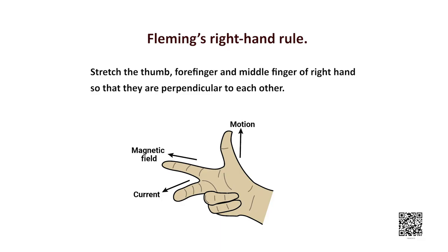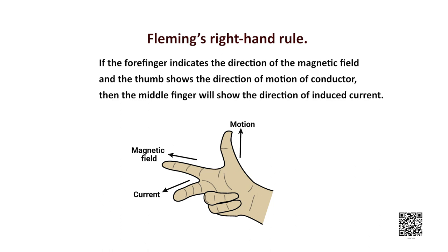Time for another rule. Fleming's right hand rule which states: stretch the thumb, forefinger and the center finger of your right hand such that they are perpendicular to each other. If the forefinger gives the direction of magnetic field and thumb shows the direction of motion of the conductor, then the center finger will show the direction of induced current. This is a simple rule and this is known as Fleming's right hand rule.